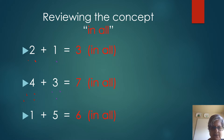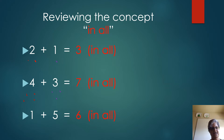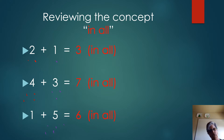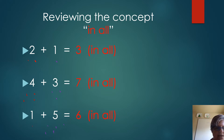I'm going to make dots underneath the number one — I'm going to make one dot. One plus five: underneath the five I'm going to make five dots: one, two, three, four, five, equals six. Let's go back and count them. My red dot underneath the one disappeared, so let's count all the dots: one, two, three, four, five, six — I have six dots in all.